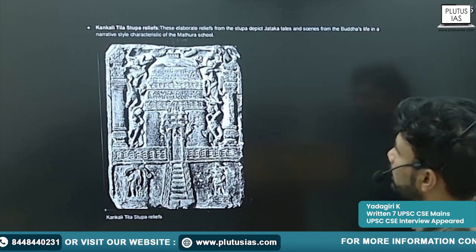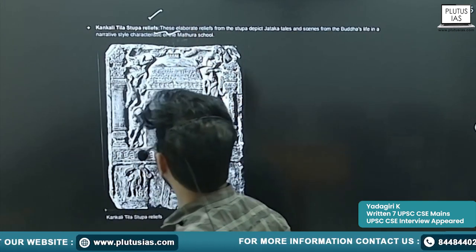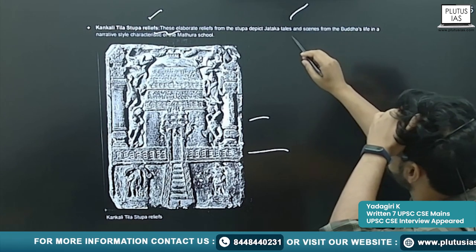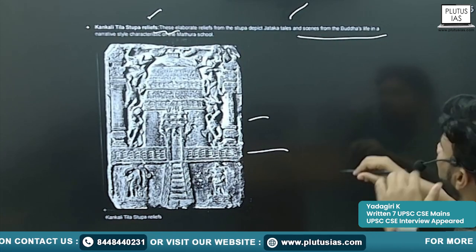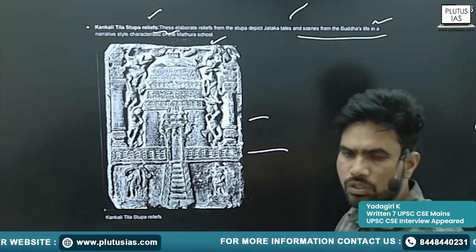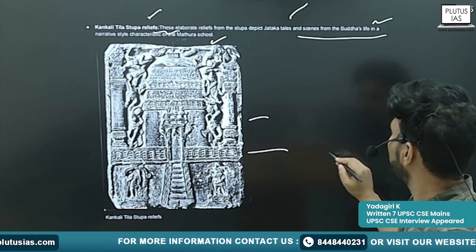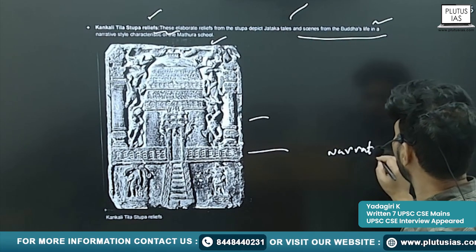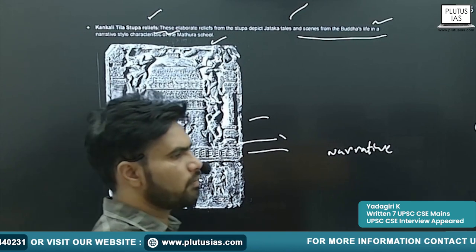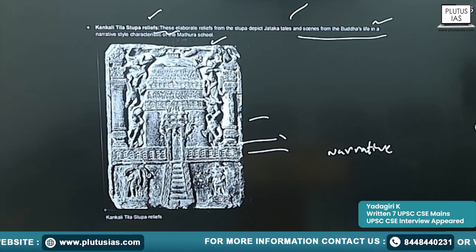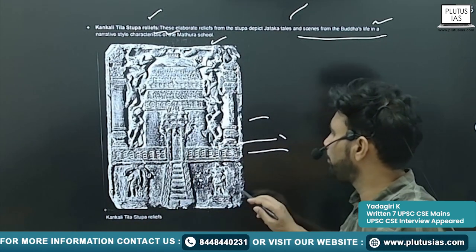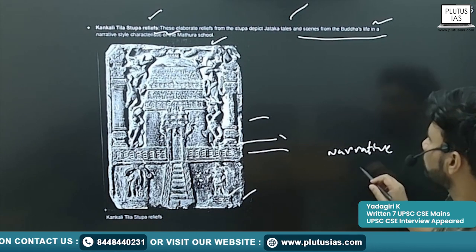Next example is the Kankali Tila Stupa reliefs. These are reliefs depicted on the stupa — depicting Jataka tales and scenes from Buddha's life in a narrative style characteristic of the Mathura School. In the Mathura School you also find narrative styles — through panels they are trying to tell a story, which is known as narrative style.